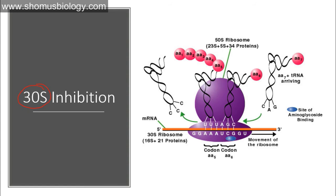Now we look at 30s inhibitors, which work differently from 50s inhibitors. The 30s inhibitors can cause misreading of mRNA and false binding of mRNA to the 30s subunit. The mRNA interacts with the 16s rRNA, which is part of the 30s ribosomal subunit, via a specific region in the mRNA called the Shine-Dalgarno sequence. Disrupting this interaction prevents assembly of the protein synthesis complex.